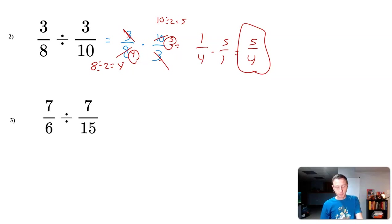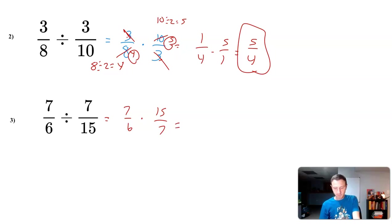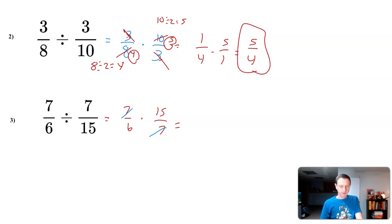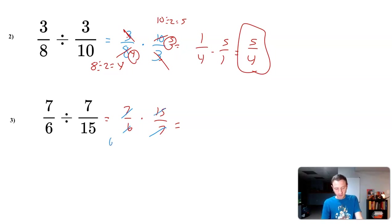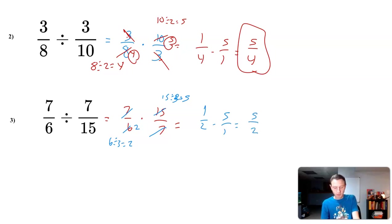Next problem: seven sixths divided by seven fifteenths. It's a division question, so rewrite as seven sixths times the reciprocal of seven fifteenths, which is fifteen over seven. I have a seven on top and seven on bottom — those simplify to one. Then I have six and fifteen: three goes into both, so six divided by three is two and fifteen divided by three is five. That gives one half times five over one, and one times five is five, two times one is two — so five halves.